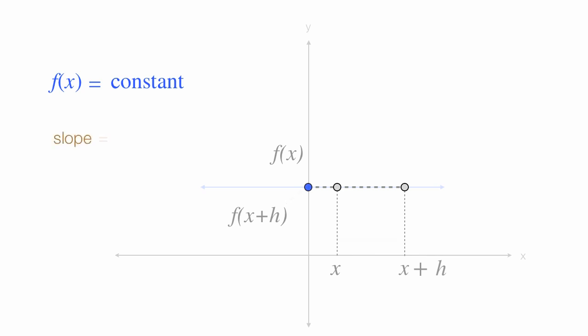If we recall, the slope of a line is the rise over the run. The run is this length, which is h. And the rise is that length, which is going to be zero.